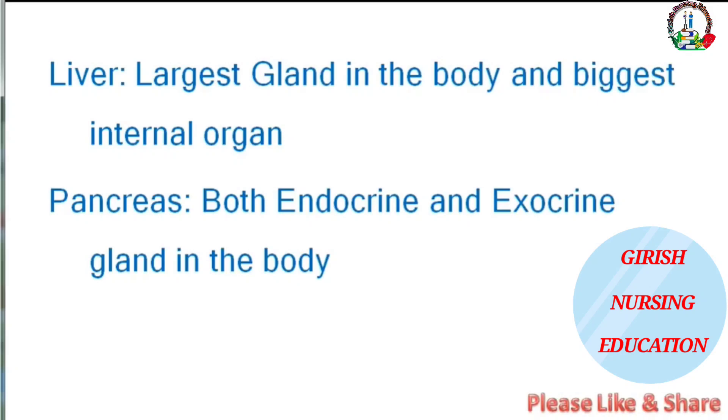Liver is the largest gland in the body and the biggest internal organ. Pancreas is both an endocrine and exocrine gland in the body.